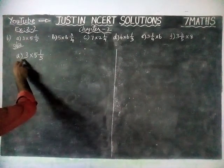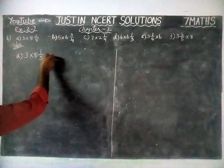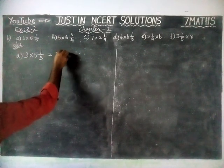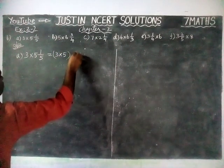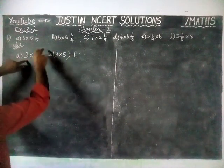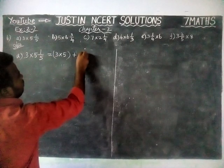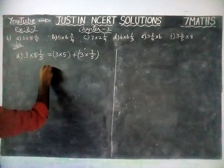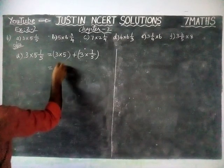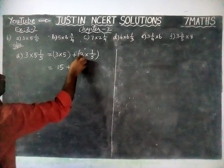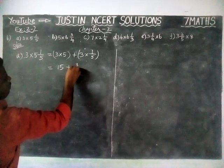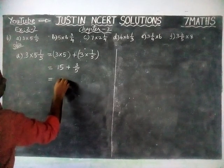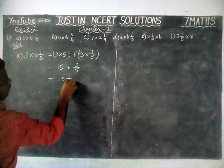First number: 3 into 5⅕ is equal to. We have to multiply 3 into 5 first. So 3 into 5 plus, again we are going to multiply the fraction, 3 into 1 by 5. That gives us 3 fives are 15, plus 3 ones are 3 by 5. Now we can write it in the mixed fraction: 15 and 3 by 5.